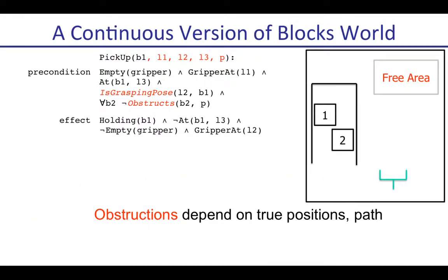Let's look at a 2D specification of the same problem — I'm making it 2D simply to make the intuition clearer. The same kinds of problems and solutions extend to higher-dimensional real cases. We have two blocks, and to grasp a block we assume the gripper simply has to align itself with one of the edges. We also assume there is a free area where if you drop something, it no longer obstructs other objects. Now we can specify everything accurately: to pick up a block, we need arguments telling us the current location of the block and gripper, the target pose the gripper should reach, and the path the gripper should take to reach that target grasping pose.